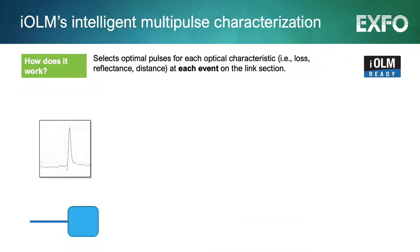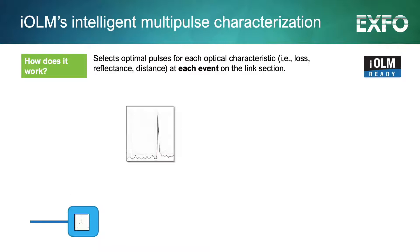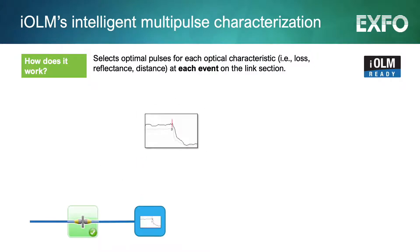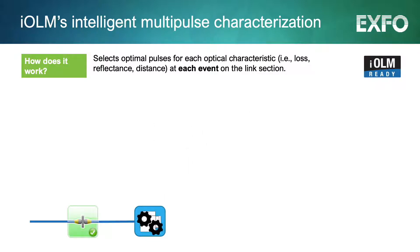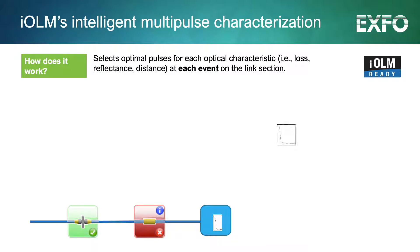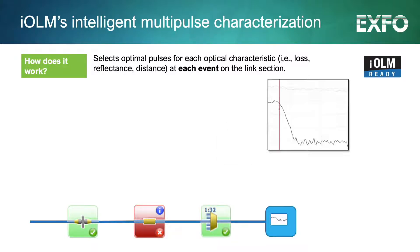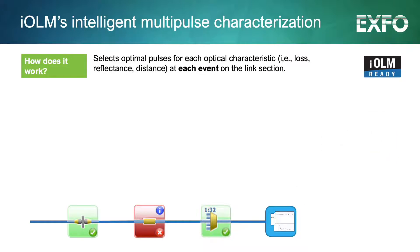IOLM's unique advantage is that our multi-pulse width characterization selects optimal pulse widths for each characteristic at each event. This patented method of characterizing loss, reflectance, and distance at each event using multiple acquisitions means that service providers can retrieve the most reliable and accurate readings in the industry.